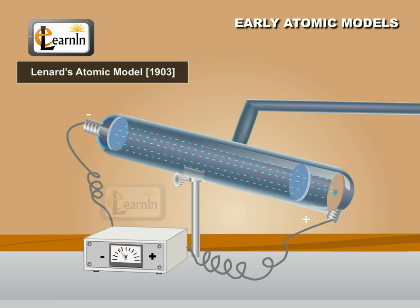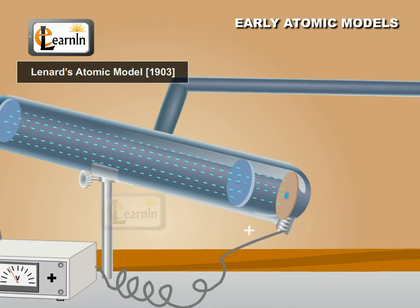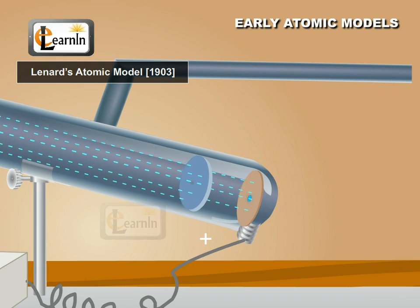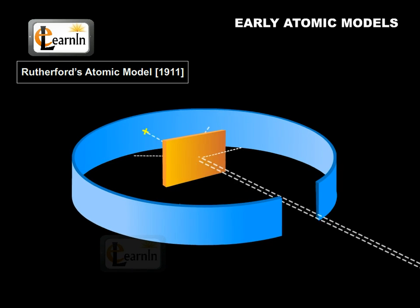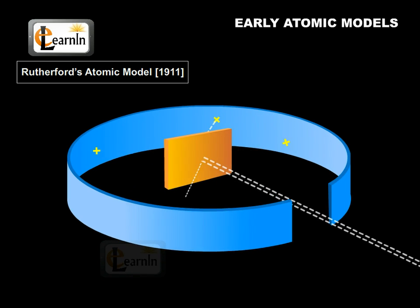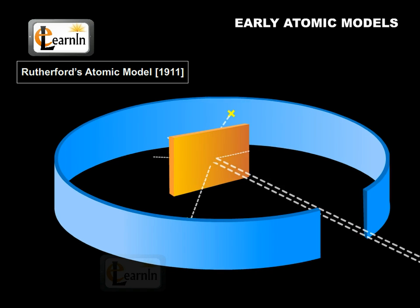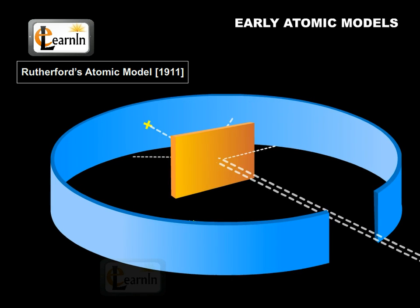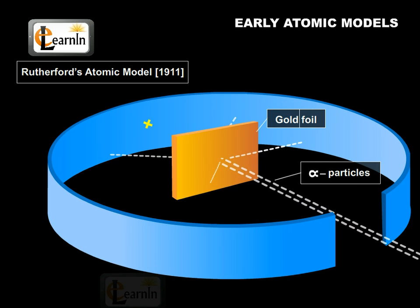Various features of the atom, like stability and mass, could not be understood from this model. Rutherford's Atomic Model, 1911. In order to understand these features, Ernest Rutherford carried out a series of experiments from 1906 to 1911 on scattering of alpha particles from gold foils.